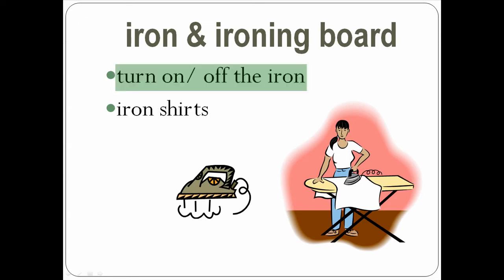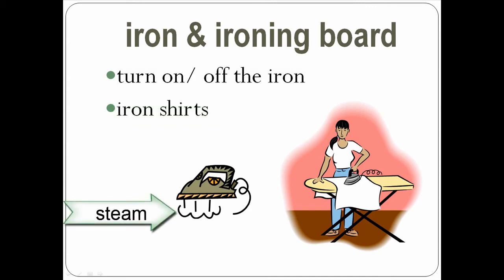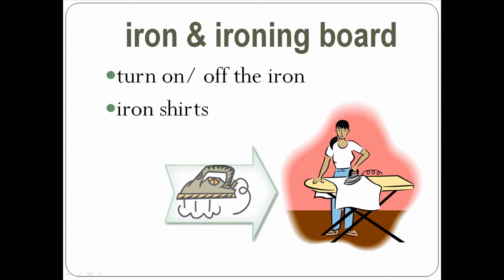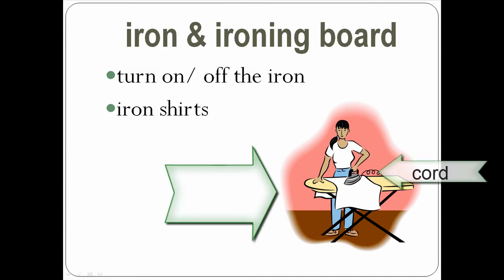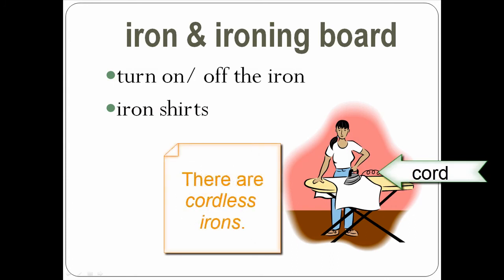Turn on, turn off the iron. Iron shirts. Some irons have steam — a steam iron. In the picture, the woman is ironing and she's using an ironing board. Her iron has a cord. Some irons don't have a cord — we call them cordless irons.